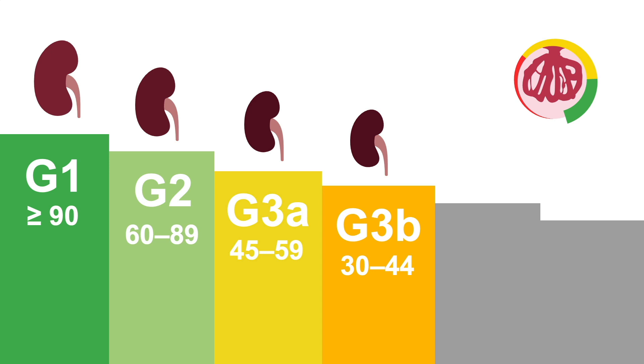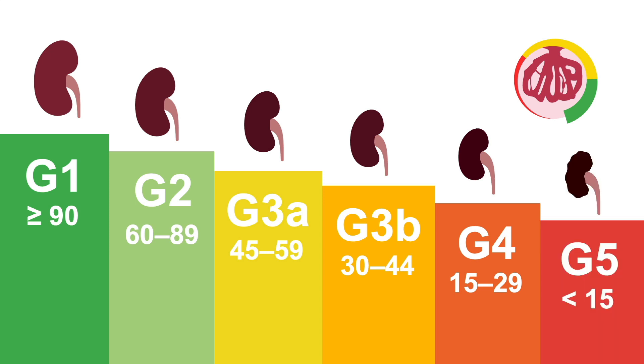G3B, where GFR is 30 to 44 milliliters per minute per 1.73 meters squared. G4, where GFR is 15 to 29 milliliters per minute per 1.73 meters squared. And G5, where GFR is less than 15 milliliters per minute per 1.73 meters squared.